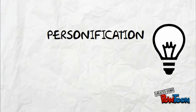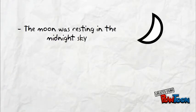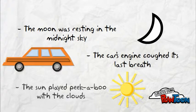The third literary device is personification. Personification is giving human qualities to an inanimate object. Some examples are: the moon was resting in the midnight sky, the car's engine popped its last breath, and the sun played peekaboo with the clouds.